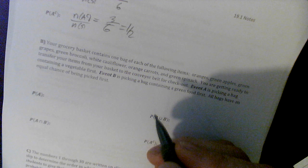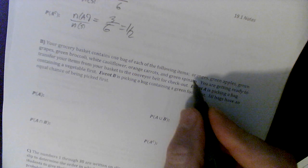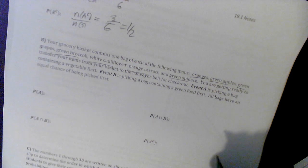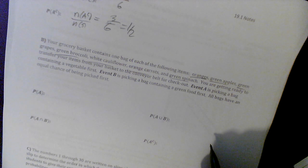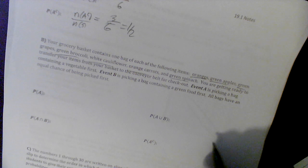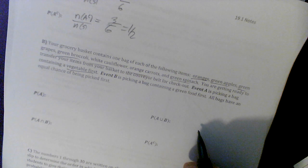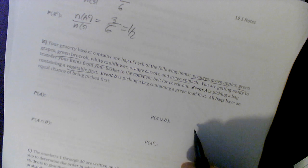Let's try a few more down here. Your grocery bag contains one bag of each of the following items: oranges, green apples, green grapes, green broccoli, white cauliflower, orange carrots, and green spinach. You are getting ready to transfer your items to your basket on the conveyor. Event A is picking a bag that contains a vegetable first, and Event B is picking a bag that contains green food first.